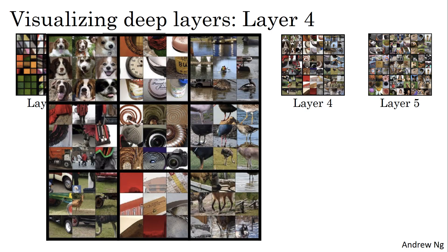How about the next layer? In layer four, you can see that the features or patterns being detected are even more complex. It looks like one unit has learned almost a dog detector — though all those dogs look quite similar, perhaps the same breed. Another hidden unit in layer four seems to be detecting water, and another looks like it's detecting the legs of a bird.